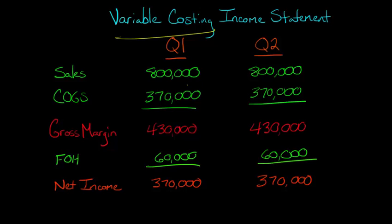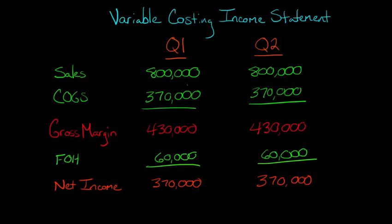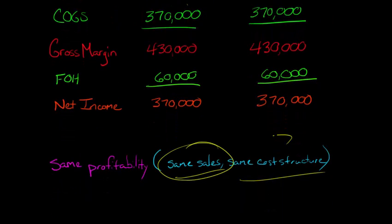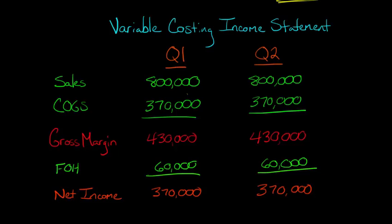The advantage of variable costing is we're not going to play games and spread this fixed overhead or capitalize it as part of inventory, because that can change the way we see the profitability of each quarter. Under absorption costing, quarter two actually looked more profitable because fixed overhead was being deferred to future periods. This variable costing income statement is much better at giving managers accurate information about profitability and how each quarter compares — and it's perfectly compatible with cost-volume-profit (CVP) analysis.